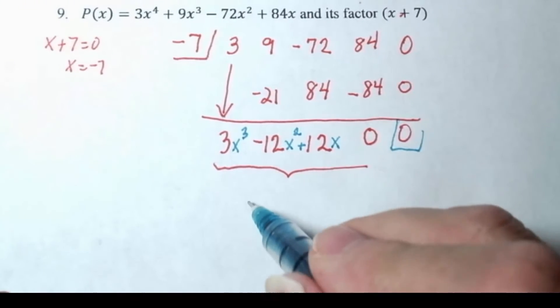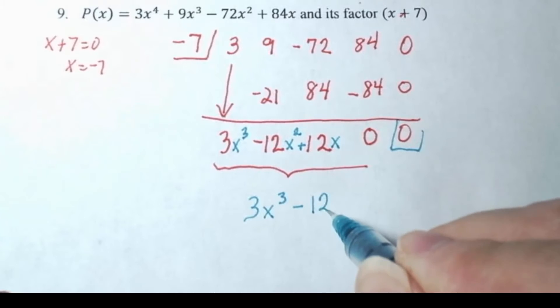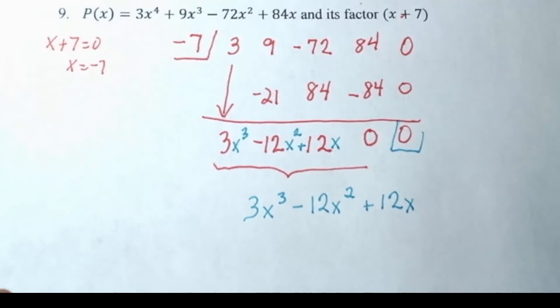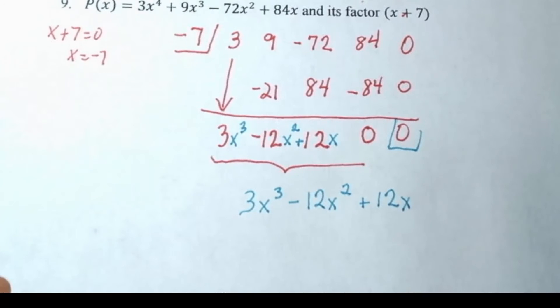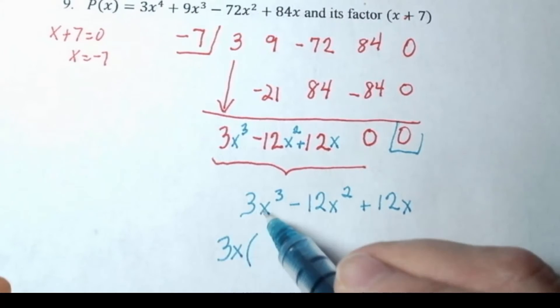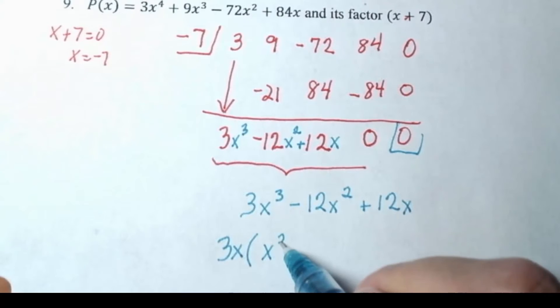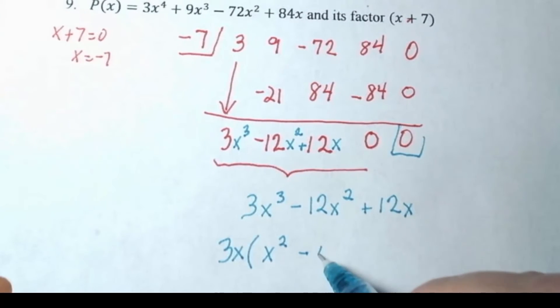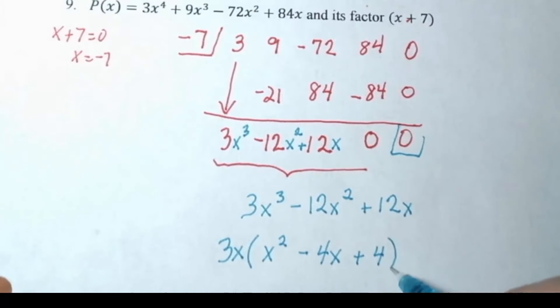But we do have to factor this guy, don't we? And actually, we're going to be happy that we don't have that constant. Can you see why? Because there's a GCF here. The greatest common factor is 3x, so we're going to factor that out first, and then that's going to leave us with x squared minus 4x plus 4.